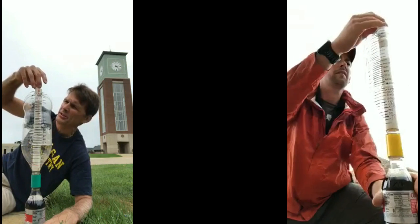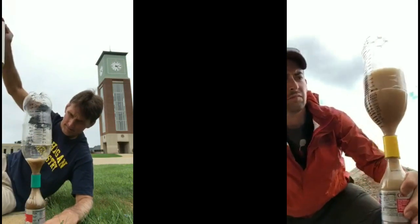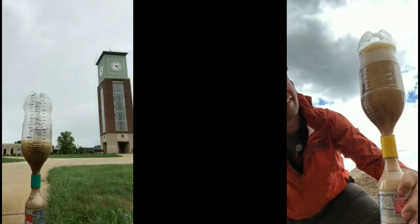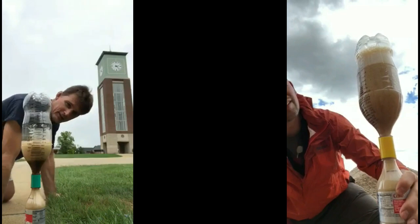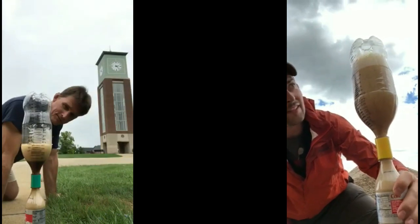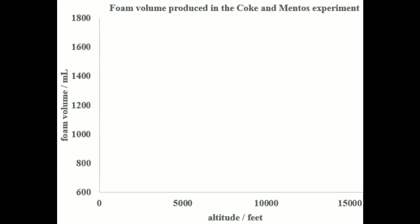Well, it's pretty clear that the experiment done at 1,000 feet produced less foam than the experiments done near the top of the mountain, which consistently produced at or above 1,500 milliliters of foam volume. Now let's take some time to look at the data collected at all elevations. We'll plot foam volume versus altitude. There's the point collected at 1,000 feet. The point from the beginning of the climb. And a bunch of other foam volumes collected all the way up the mountain. While the data do seem to jump around a little bit, it's pretty clear that when we look at all of the data, foam volume increases with altitude.